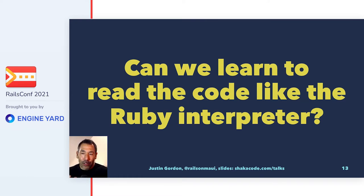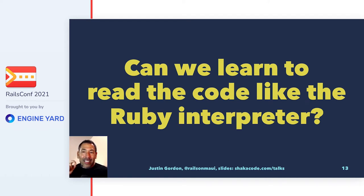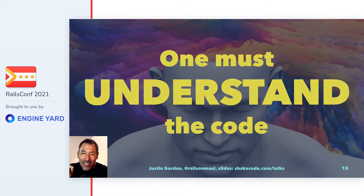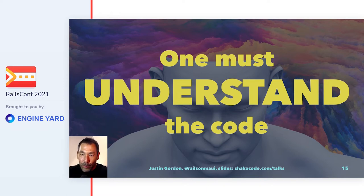So can we learn to read the code like the Ruby interpreter? One does not simply copy and paste code — one must understand the code. After this talk, you're going to be able to look at that code and know it's not some magical Rails DSL; it's just plain Ruby. These are messages we're sending to objects, these messages have arguments, there are variables being declared — and that's pretty much what's going on. There are just no mysteries.